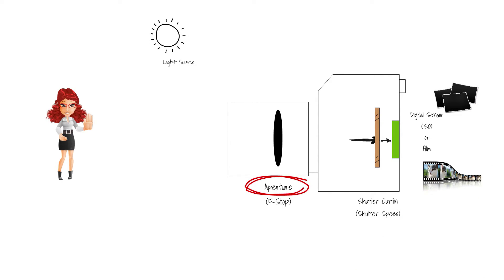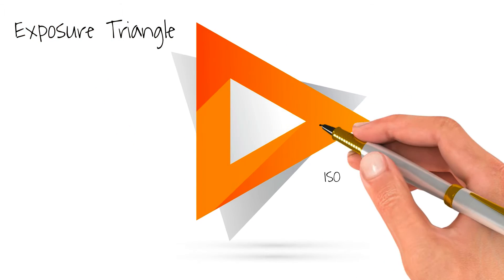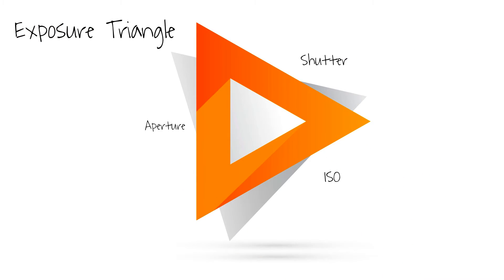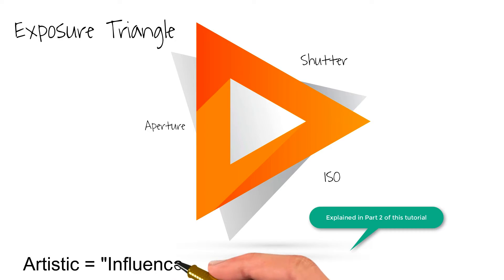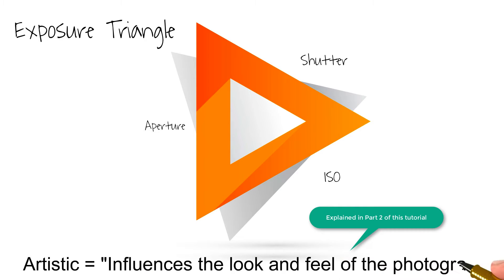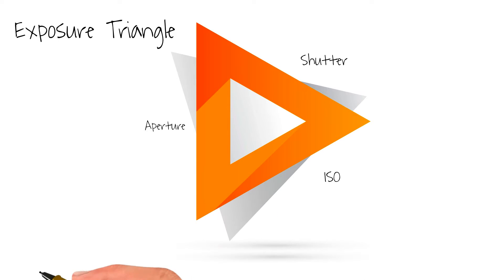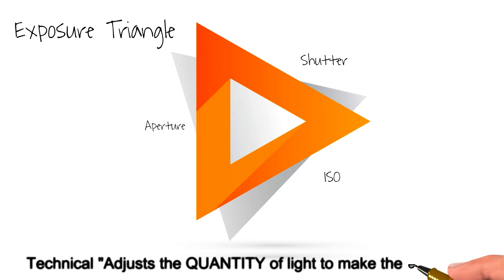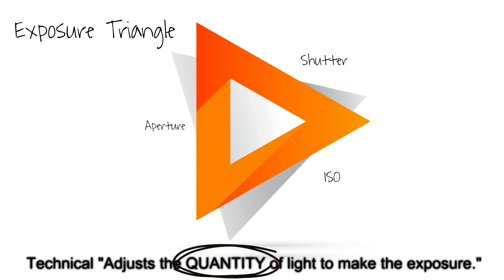The aperture, the shutter speed, and the ISO are the three components that make up what is known as the exposure triangle. They have two roles: one is the artistic part, which influences the look and feel of the photograph; the second is the technical part, which adjusts the quantity of light to make the exposure — the quantity being the important part.